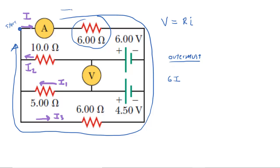When you're moving in the same direction as the current, put a negative sign in front of your potential change, because moving with the current represents a drop in potential through the resistor. Continuing clockwise around the outermost loop, we encounter another resistor. We're going against the current here — traveling left through the loop, but the current is going to the right. Going against the current is a positive potential change, so we write positive six times I3. Returning to the starting point, we set the sum of potential changes equal to zero.